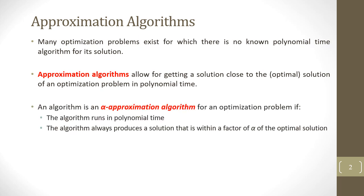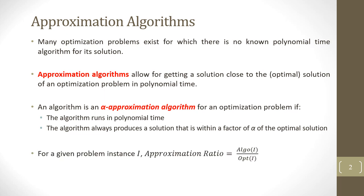An algorithm is an alpha approximation algorithm of an optimization problem if the algorithm runs in polynomial time and always produces a solution that is within a factor of alpha of the optimal solution. For a given problem instance, the approximation ratio is the ratio of the time taken by the approximation algorithm divided by the time taken by the optimal algorithm.